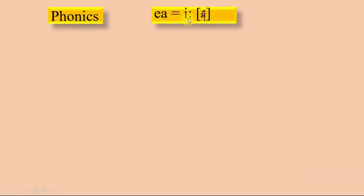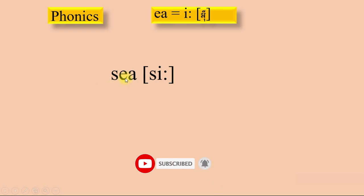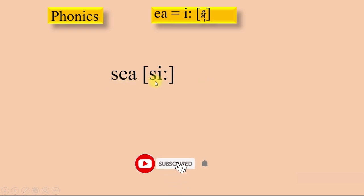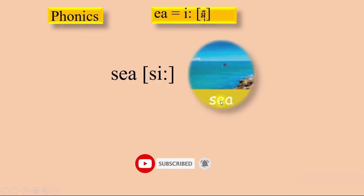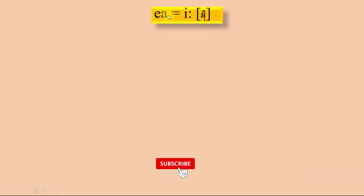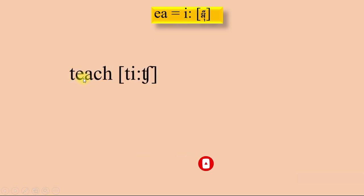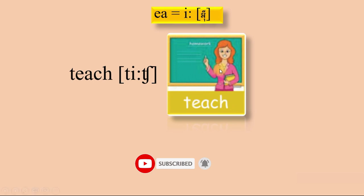Okay, the sound E — so in the word S-E-A: sea. And E-A in the word T-E-A-C-H: teach. Teach means the teacher teaches. And then the vowel O-A together makes the sound O. In the word R-O-A-D: road. You can ride or walk on the road.